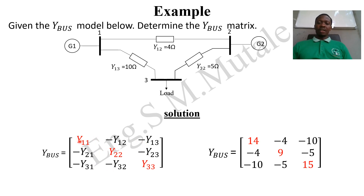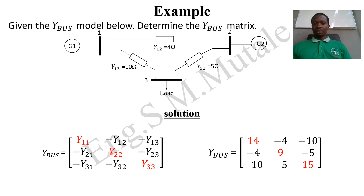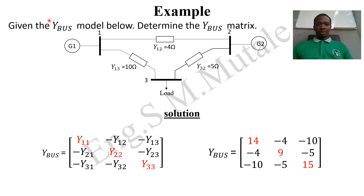Y11 is the summation of all admittances connected at bus one: 4 + 10 = 14. For the off-diagonal elements in row one: Y12 is the admittance between bus one and bus two, which is 4, but negative, so -4. Y13 is the admittance between bus one and bus three, which is 10, but negative, so -10.